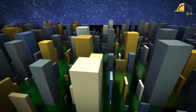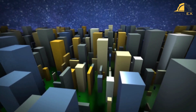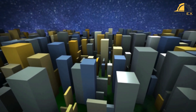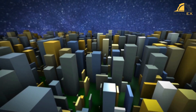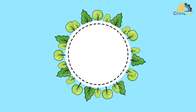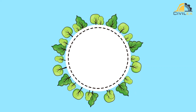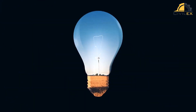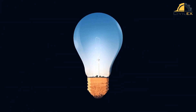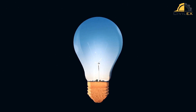In conclusion, sustainable design techniques for building structures are vital in creating environmentally responsible and energy-efficient buildings. By implementing passive design strategies, focusing on energy-efficient building envelopes, promoting water efficiency, selecting sustainable materials, and conducting life cycle assessments, civil engineers can contribute to a greener future.